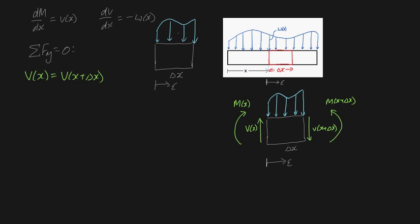If w is a force per unit length, then if we just take the area under this curve, the total area will give us the total force due to this distributed load. Let's analyze a small slither of this curve — that is going to be your small element of force, df. That's because this is a force per unit length; if we multiply the force per unit length by its corresponding length, that gives us our force. So df will be the area of this slither, which is going to be w of epsilon times d epsilon — that's the area of the slither, with length d epsilon and height w of epsilon.